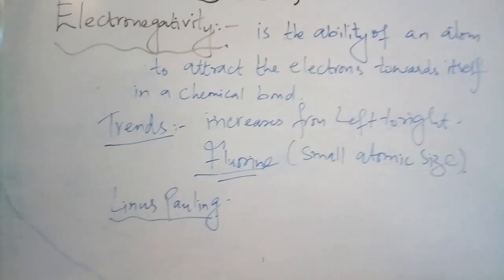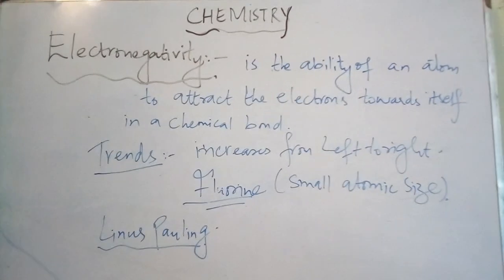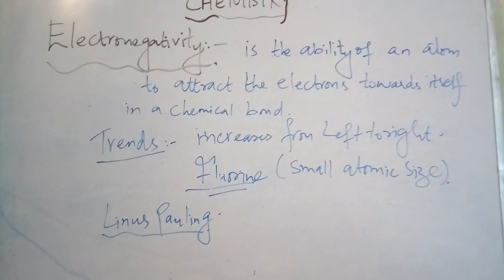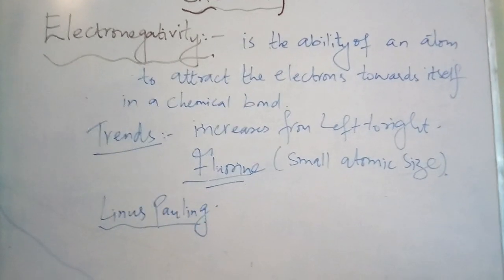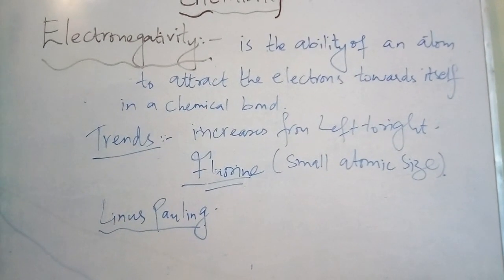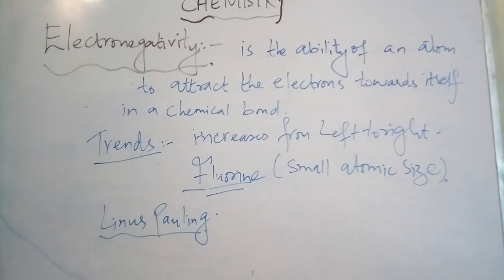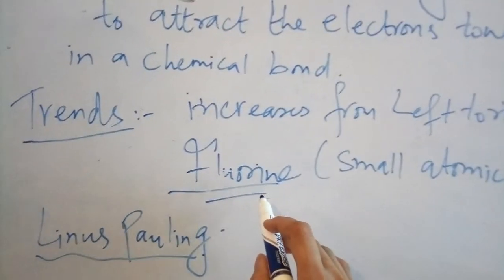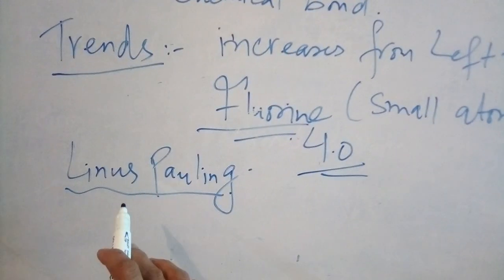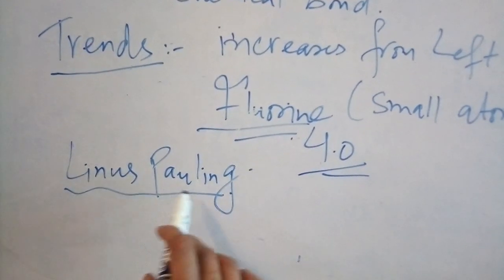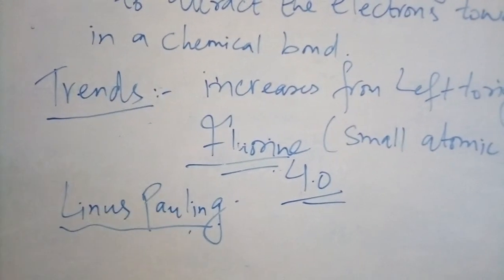The smaller the atom, the more readily it will attract electrons in a chemical bond and a negative charge will be formed. If you can see the electronegativity scale, you can find out that fluorine is the most electronegative element of the periodic table. Its electronegativity is 4, calculated by a scientist named Linus Pauling.